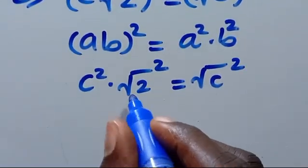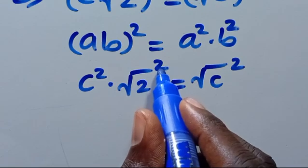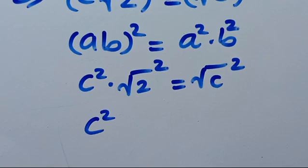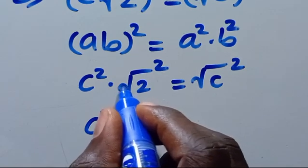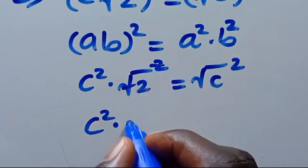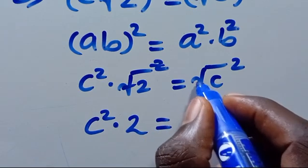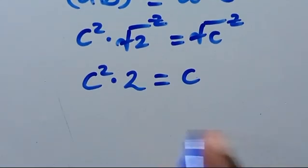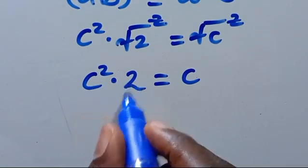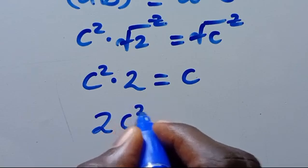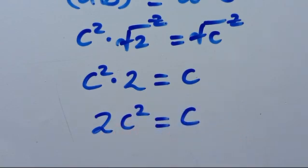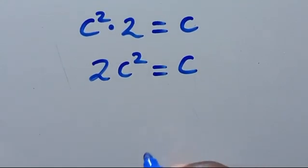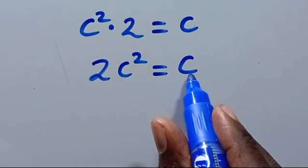Mind you, the square root and square normally cancel out. So (root 2)² cancels to give 2, and (root C)² cancels to give C. Therefore we have C squared times 2 equals C, which means 2C squared equals C.